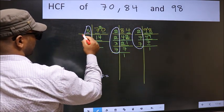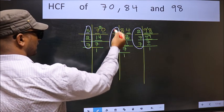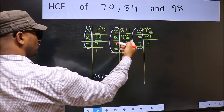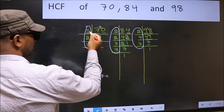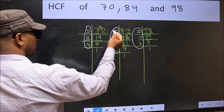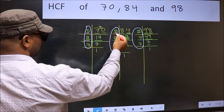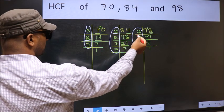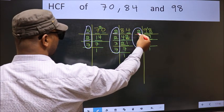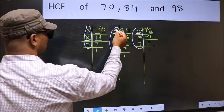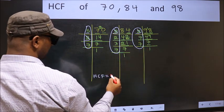Starting with the number 5. Do we have 5 here? No. So no need to check in the other place. Next number 2. Do we have 2 here? Yes. Now go to the other place. Do we have 2 here? Yes. So cut 2 right here.